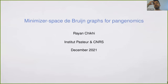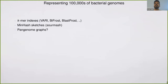Before I start, this will include some recall of what minimizer space de Bruijn graphs are before I dive into the pan genomics part. So if you've seen the talk from RECOM, for instance, there will be some repeats. The title of this slide is representing hundreds of thousands of bacterial genomes.